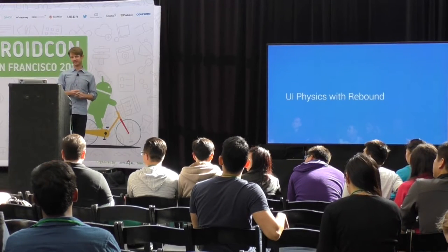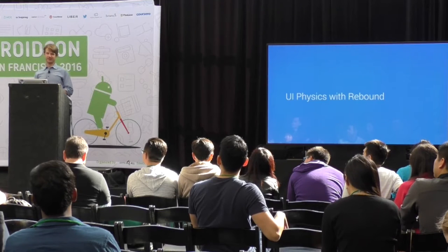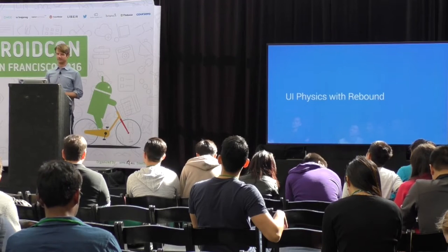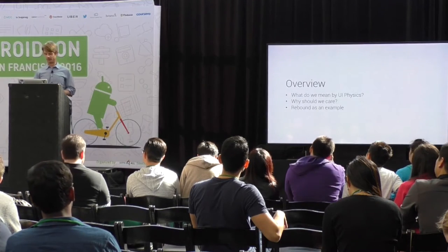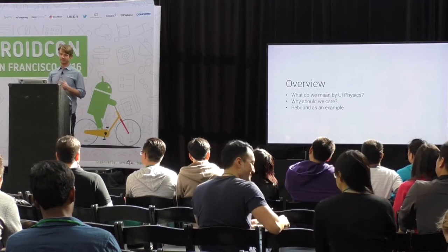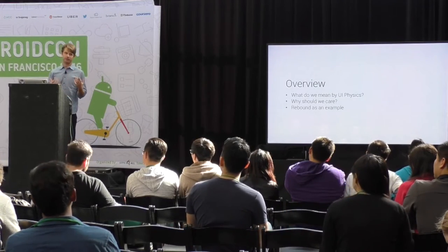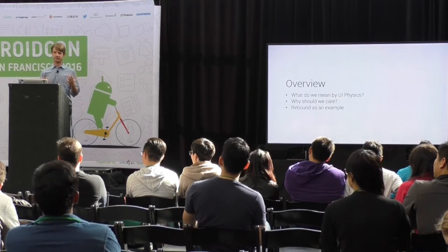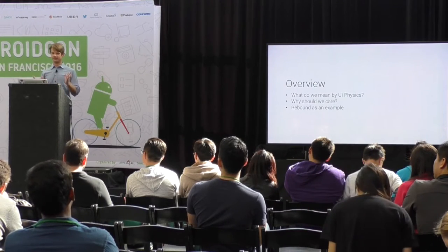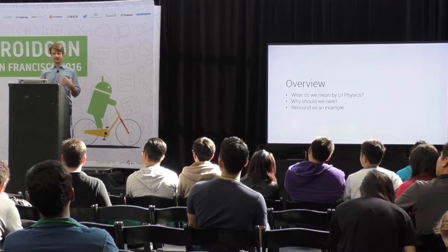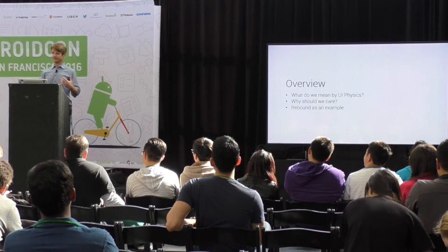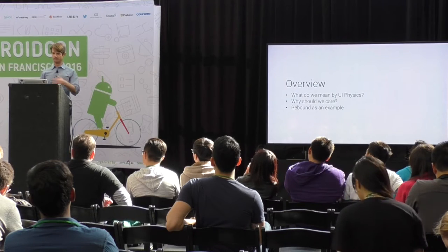My name is Will Bailey. I'm an Android engineer at Instagram, and today I'm going to be talking about UI physics and a little library I wrote called Rebound that can help you bring UI physics to your applications. So what are we going to cover today? First, I'd like to talk about what we mean when we talk about UI physics. Then I'd like to explain why you might want to include physics in your application and what value it'll add, both to you as an engineer and to your users. Then I'd like to take the library Rebound as an example of a simple physics library, but I hope the concepts will be generalizable so that if you decide to implement your own physics animation library, you'll be able to take some of these tips and tricks with you.